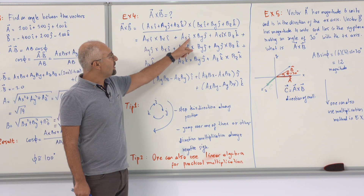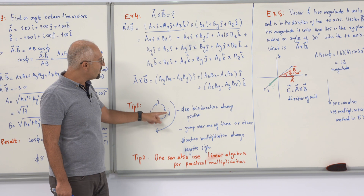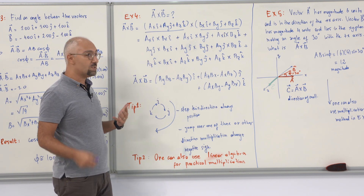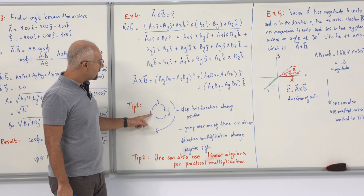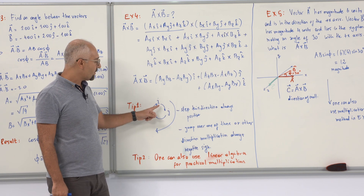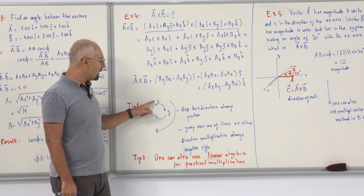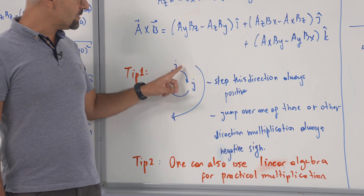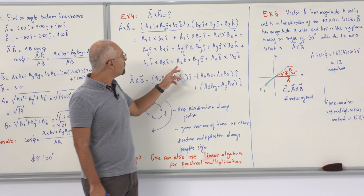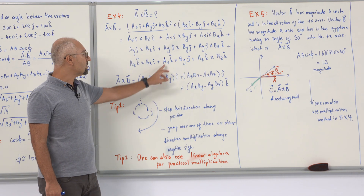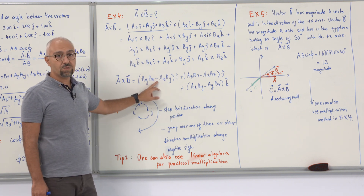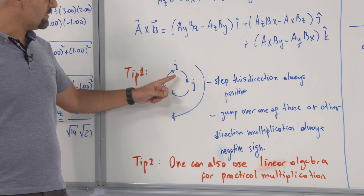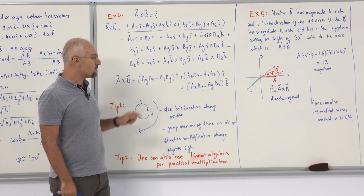For cross products between different unit vectors: i×j = k, j×k = i, and k×i = j when following the cyclic direction — always positive. But if you reverse the direction, for example k×j, you get −i. So following the ring in one direction gives a positive result; going the opposite direction gives a negative sign. This is the essence of vector calculus for cross products.